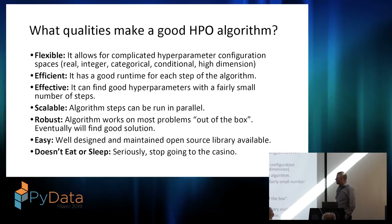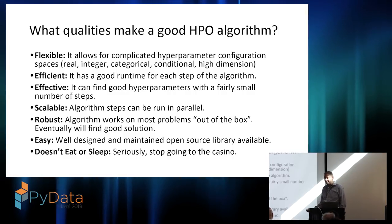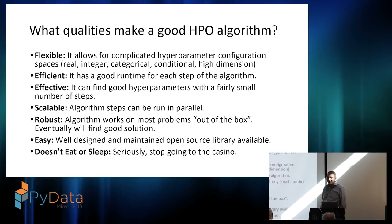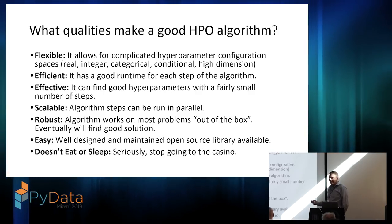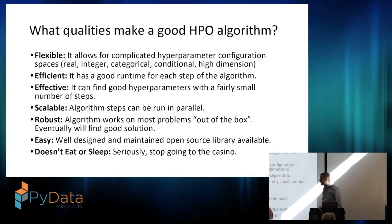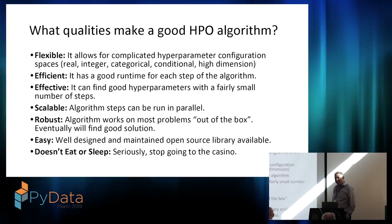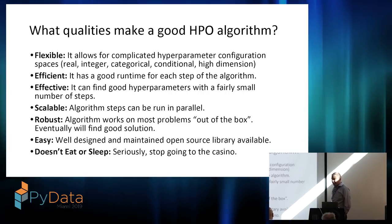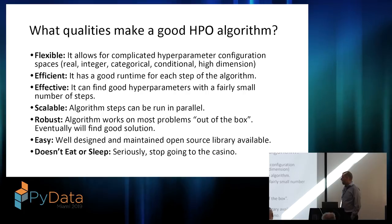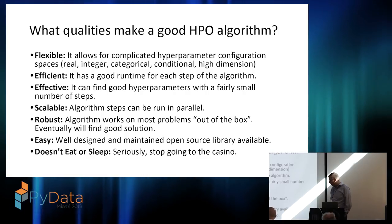Easy has probably been the biggest barrier to why most people still manually tune their hyperparameters — it's not easy to write these things from scratch. There are still a lot of moving parts. Really it comes down to finding something that's already existing, well maintained, and easy to use, and getting familiar with it. And then you don't want your algorithm to eat or sleep — seriously, stop going to the casino.